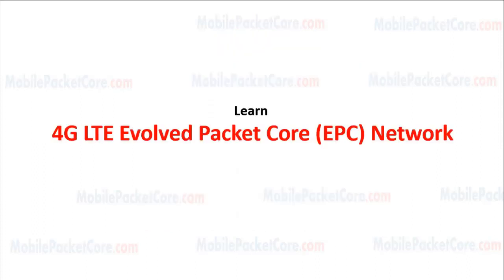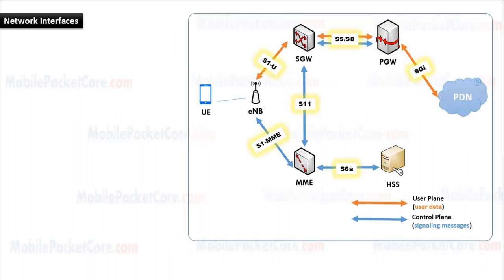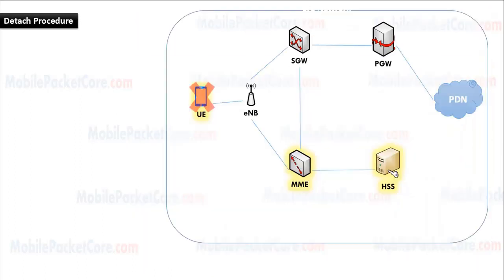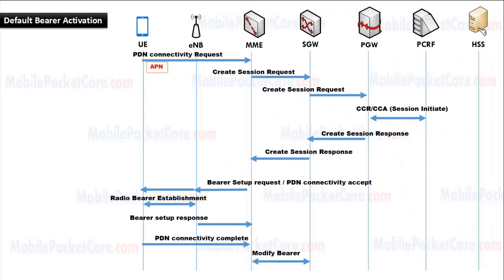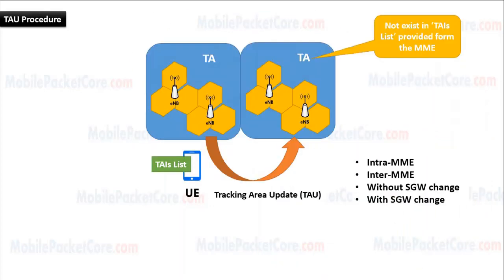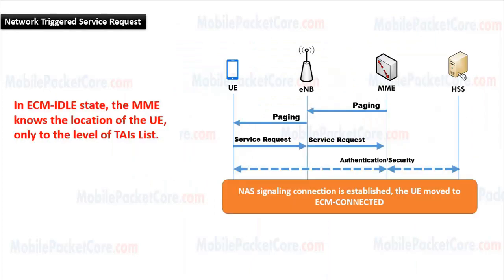In the first course — Learn 4G LTE Evolved Packet Core Network — you will learn network nodes and architecture of 4G LTE network, network interfaces, and basic procedures including attach and detach, default bearer and dedicated bearer activation, tracking area update, and handover.